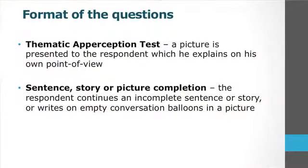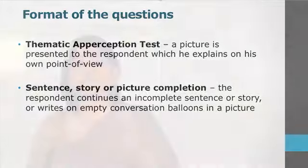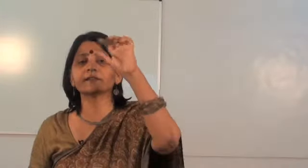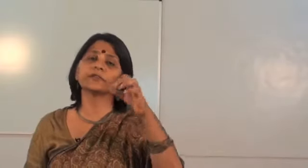Then there is the thematic perception test, where a picture is presented to the respondent which he explains from his own point of view. This is not very commonly used. There is also a sentence, story, or picture completion type, where the respondent continues an incomplete sentence or story, or writes on empty conversation balloons in a picture, giving the first thought that comes to mind. When conducting a survey with a larger number of respondents, it is mostly the completely unstructured or open-ended questions that are used.